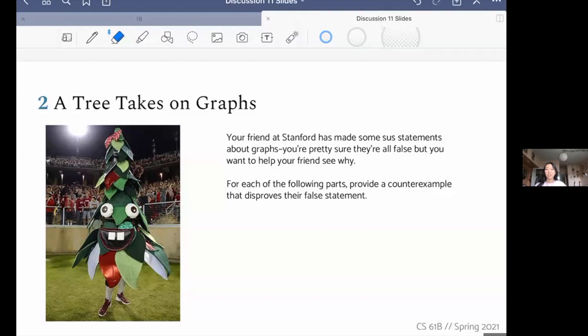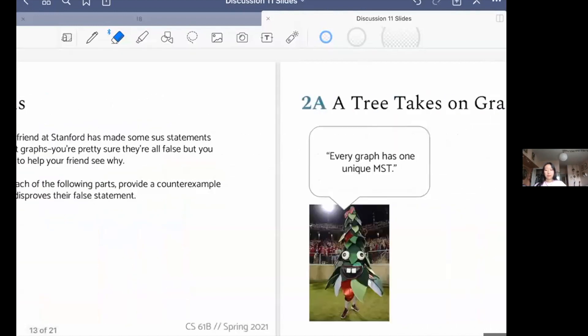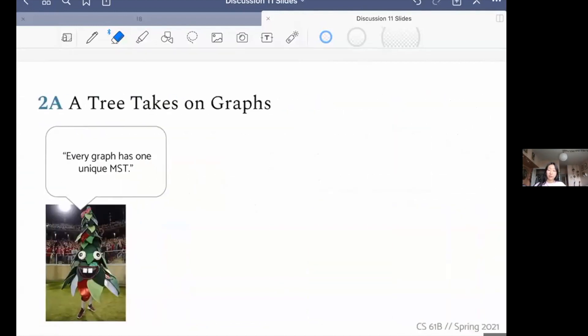This next problem is called a tree takes on graphs. Your friend at Stanford has made some sus statements about graphs, and you're pretty sure they're all false, but you want to help your friends see why. So for each of the following parts, provide a counterexample that disproves their totally false statement. The first very wrong thing your Stanford friend said was that every graph has one unique MST. So think about a graph that would disprove this statement to them.